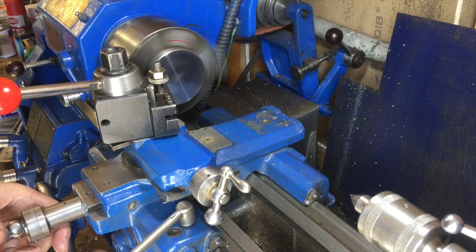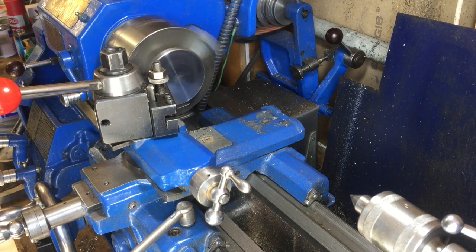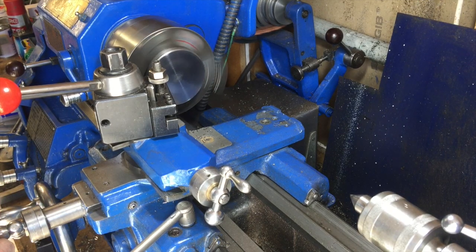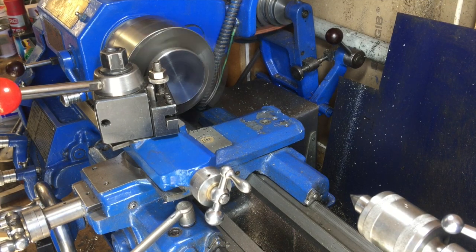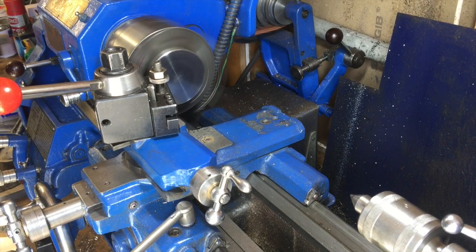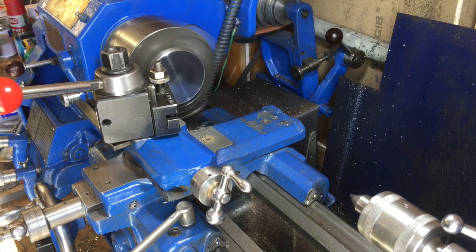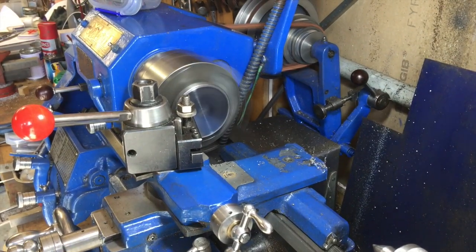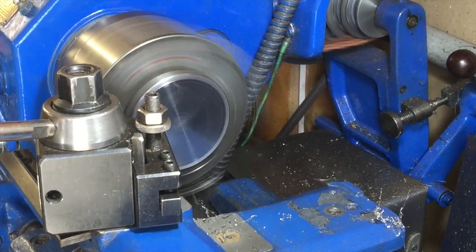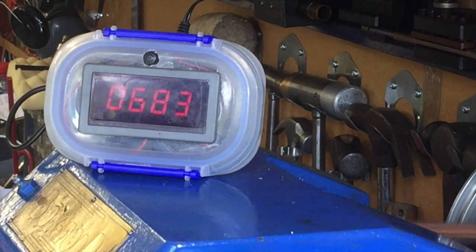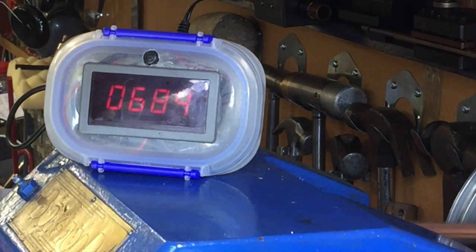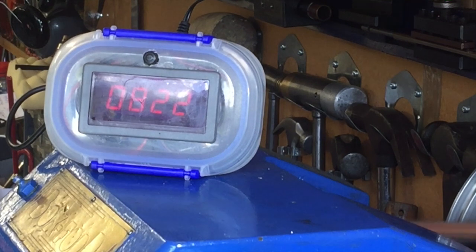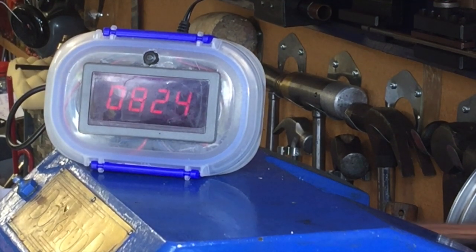I'm using the carbide tipped cutting tools and they do a very nice job of turning the stainless steel. I could use a very slow feed rate—you can see I'm using an automatic feed here—and that produces a nice finish. I tend to use relatively high cutting speeds with these carbide tips and make relatively shallow cuts, and they do well.